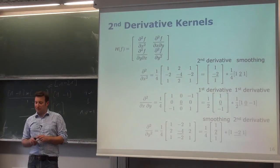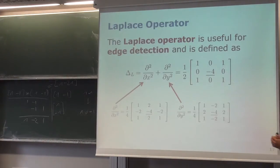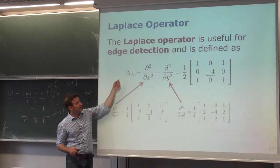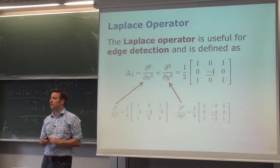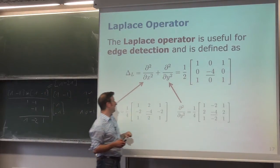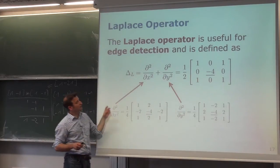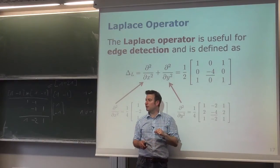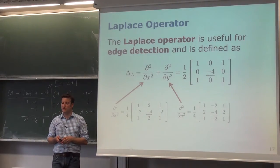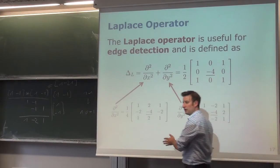If we want a single operator combining x and y gradient magnitudes, we can define the Laplace operator, useful for simple edge detection. The Laplace operator is defined as the second derivative with respect to x plus the second derivative with respect to y. We take the two Hessian kernels for the diagonal elements, sum them up — keeping normalization — and obtain an operator that computes this sum at every image location.